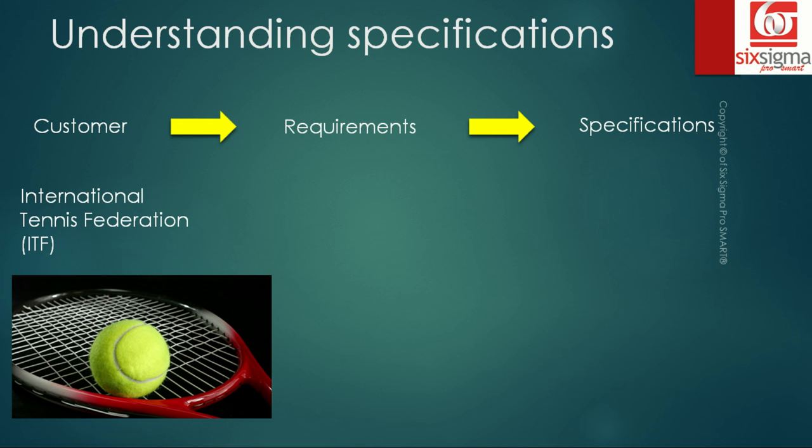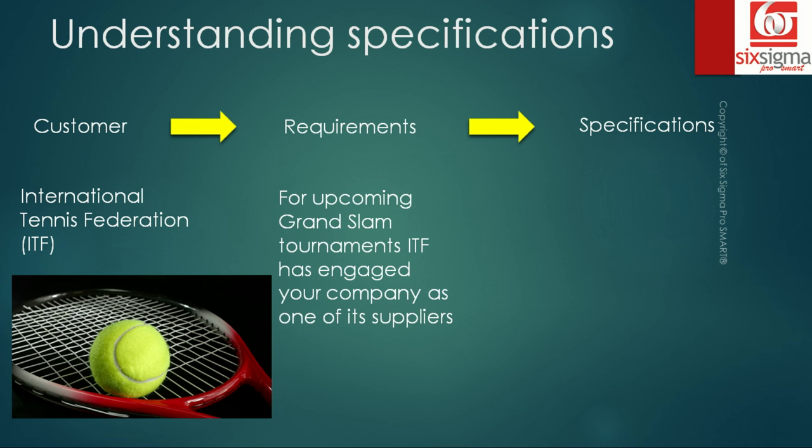Suppose our customer is the International Tennis Federation or the ITF. You're working for a supplier of sports equipment so they approach you with a requirement which is an order of tennis balls. As a supplier of the tennis balls, you need to understand the requirements of your customer and one of the critical requirements is the diameter of the ball. So they give you specifications that the tennis ball should range anywhere between 6.56 to 6.86 centimeter in terms of diameter.